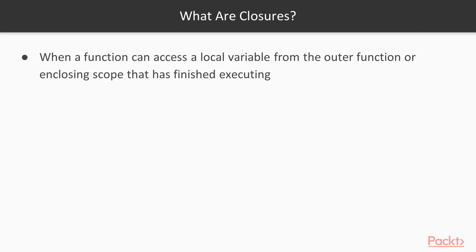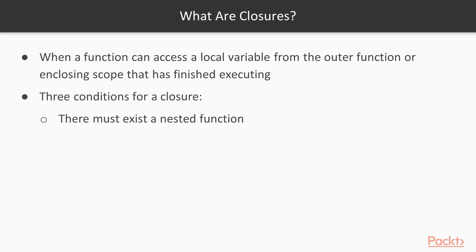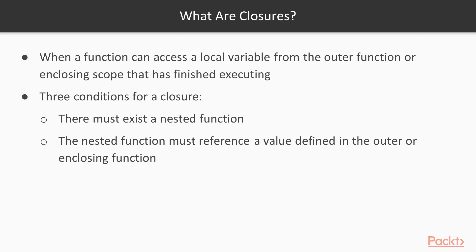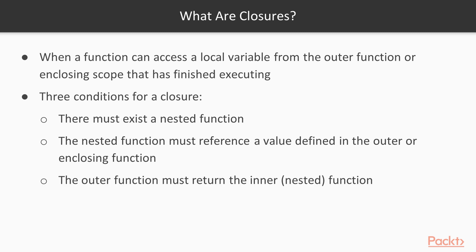Now let's come to closures. When a function can access a local variable from an outer function or enclosing scope that has already finished executing, it is called a closure. This means the inner function can still access variables of the outer function even after the outer function has finished. There are three conditions for a closure: there must exist a nested function; the nested function must reference a value defined in the enclosing function; and the outer function must return the nested function.